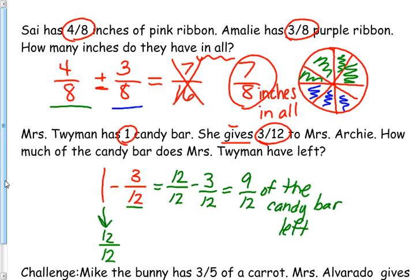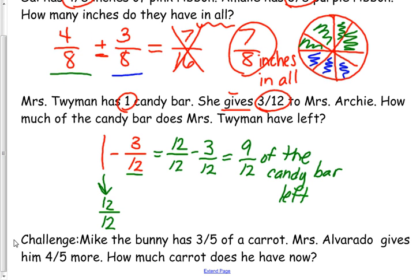And we have one quick challenge we want to show you. Mike the bunny has 3/5 of a carrot. Mrs. Alvarado gives him 4/5 more. How much carrot does he have now? At first you might have the answer just like that, but there's something a little bit different about this question. I'm challenging you to figure out what's different and come in with that answer tomorrow. Good luck. See you later.